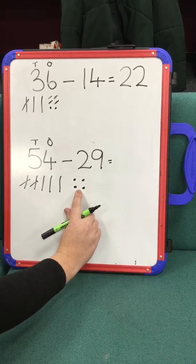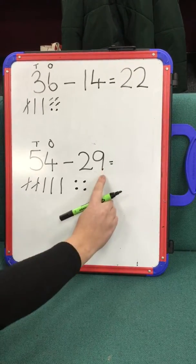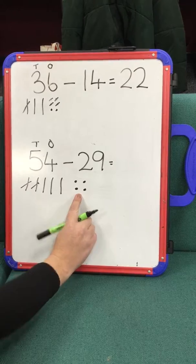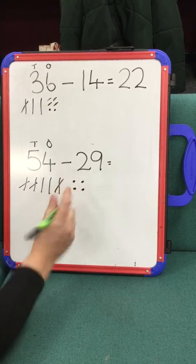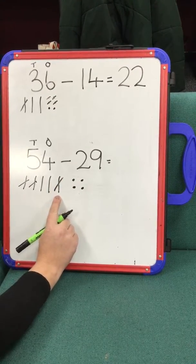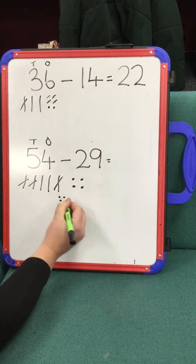So this is where the method of exchanging comes into play. I need more ones to take away. So I'm going to cross that 10 out and exchange that 10 for 10 ones.